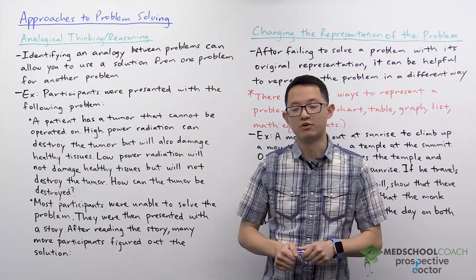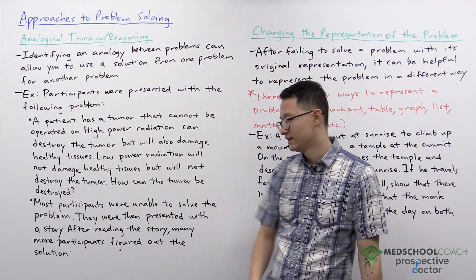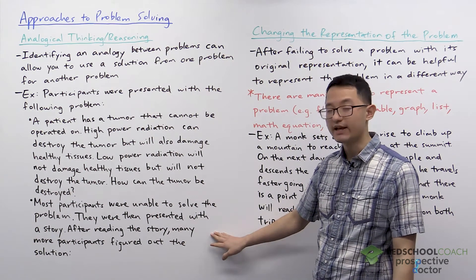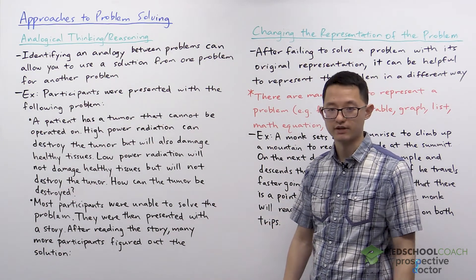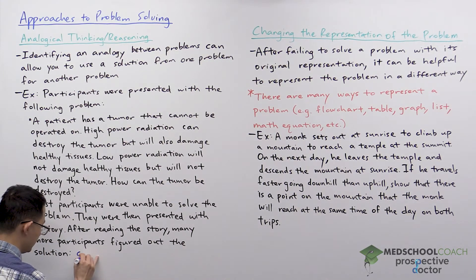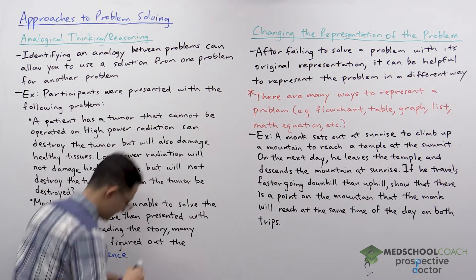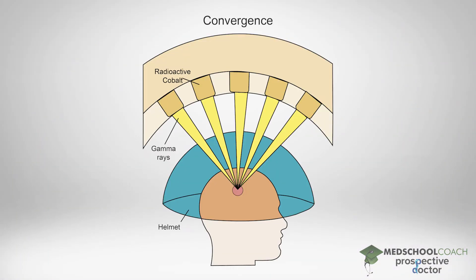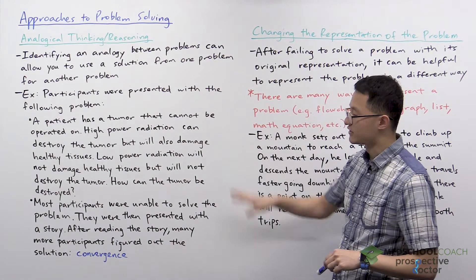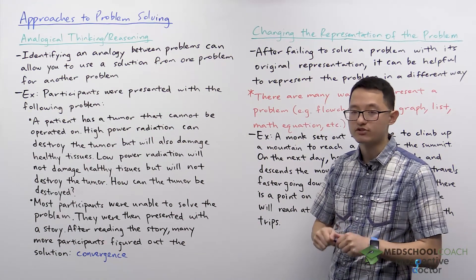After being presented with this story, many more participants were able to arrive at the solution, which is convergence. Instead of using a high power laser that would damage tissue, you use low power radiation directed at the tumor from multiple directions. The radiation converges at the tumor, so only the tumor is destroyed and the healthy tissues are undamaged. This shows how analogical thinking or reasoning can be used to solve problems.